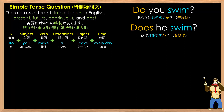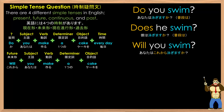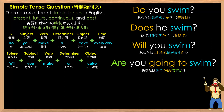Next, we have future tense question, where you put 'will' at the start of the sentence, as in: Will you make a cake? Another example is: Will you swim? So no matter the subject, it's always the same form. Another way to say future is with: Are you going to swim?